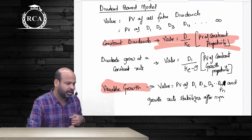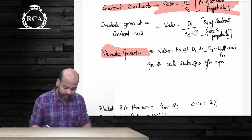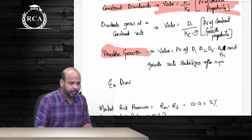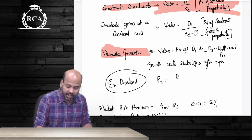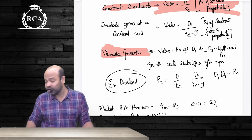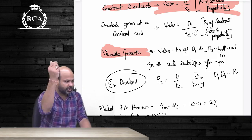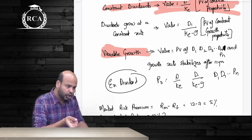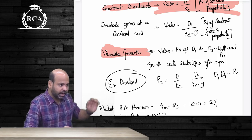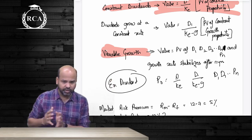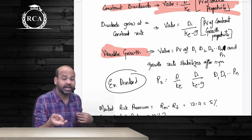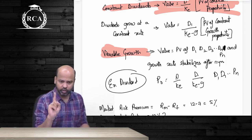An important point: all of these valuation models always give us valuation on an ex-dividend basis, not on a cum-dividend basis. P0 using D/KE, D1/(KE−G), or discounting D1, D2, D3 through Pn — none of that includes D0. If the market price given is cum-dividend, your job is to first remove D0 to convert it to ex-dividend, then compute the missing figure. Usually when market price is given, you are expected to compute the required rate of return KE, so you must first convert the cum-dividend price to ex-dividend.